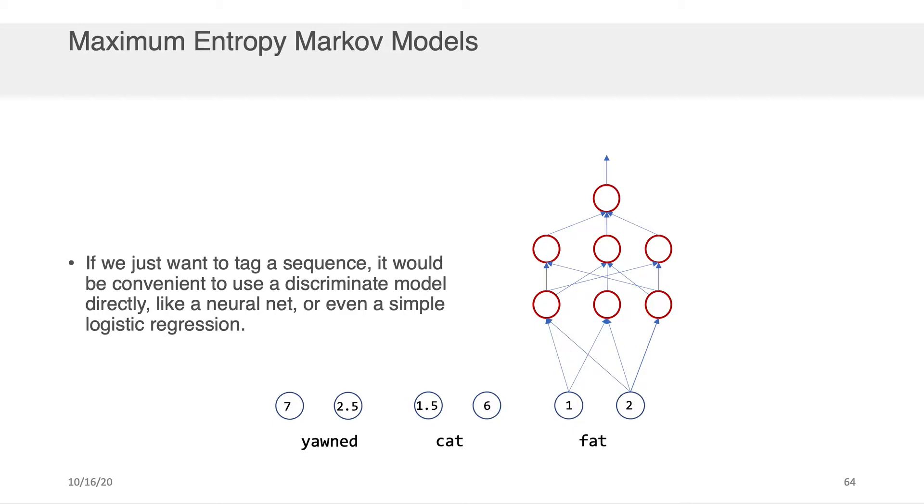But if the ultimate goal here is just to tag a sequence, it'd be really convenient to use a discriminative model directly, like a neural network or even just a simple logistic regression.